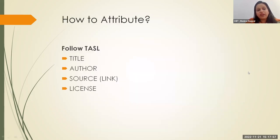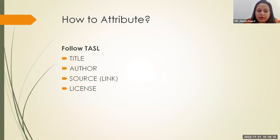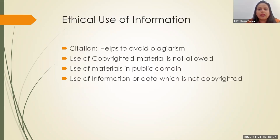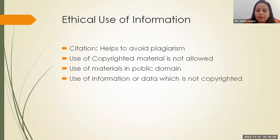We keep saying 'give attribution' but we don't know how to do that. There is a process — the TASL rule: T-A-S-L. Write the Title of the resource, the Author of the resource, the Source or link from where you accessed it, and the License applied by the author. These four things need to be mentioned under citation. For a teacher, citation is most important — it keeps you safe from violating anything and helps avoid plagiarism.